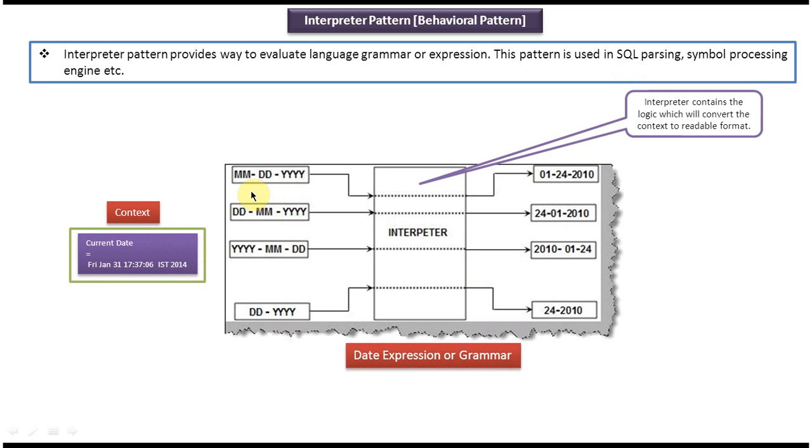The first one is month, date, year. The second expression is date, month, year. The third expression is year, month, date. And the fourth expression is date and year.